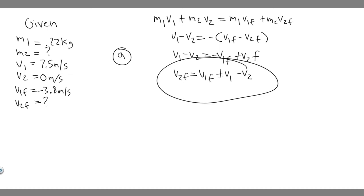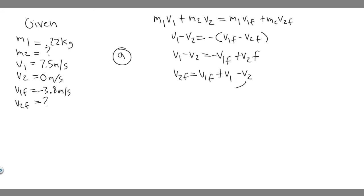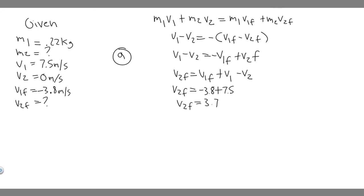We have all the variables needed. Plugging in: V2_final = (-3.8) + 7.5 - 0. That gives us -3.8 plus 7.5, which equals 3.7 meters per second. So the velocity of the target ball after the collision is 3.7 m/s — that's the answer to Part A.